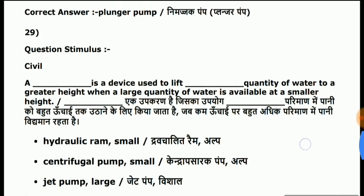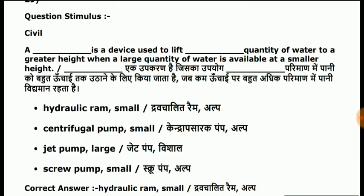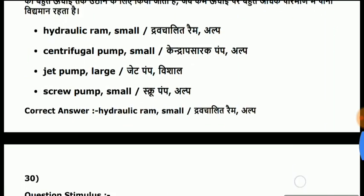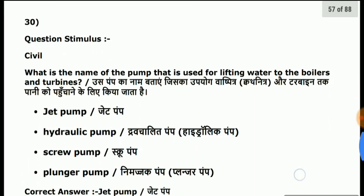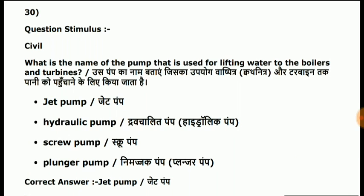Question 29: which device — hydraulic ram — is a device used to lift a small quantity of water? So the answer is hydraulic ram. Question 30: what is the name of the pump that is used for lifting water to boilers and turbines? Answer is jet pump.